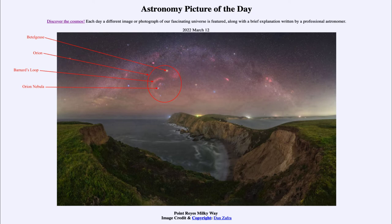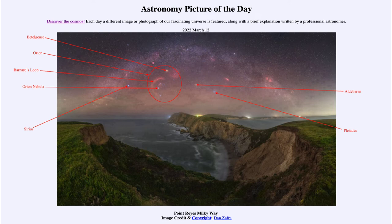Off to the left of that we see the brightest star in the sky, which is Sirius — the brightest star other than our own Sun. A little bit to the right of Orion we see the constellation of Taurus, which includes the bright star Aldebaran, another reddish star, and the star cluster known as the Pleiades, the blue cluster off to the right. Then up above and to the right of the Pleiades we see the California Nebula, another one of those emission nebulae.